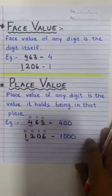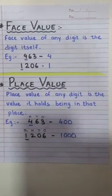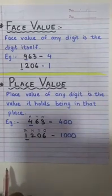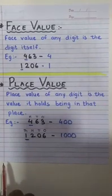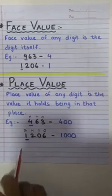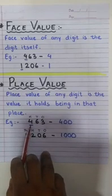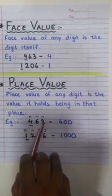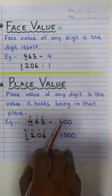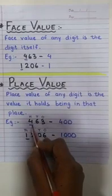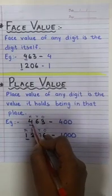Now place value of any digit is the value it holds being in that place. That means if I ask you the place value of 4 in 463, it will be 400 because 4 is under the column of 100.